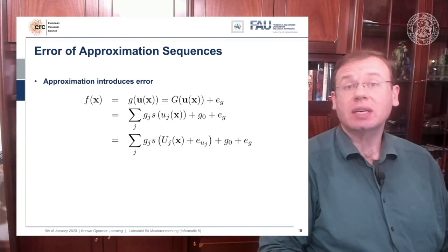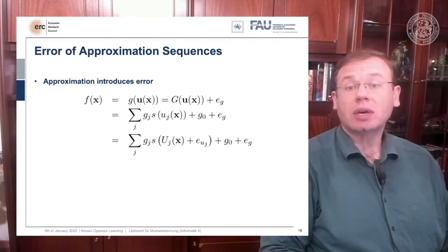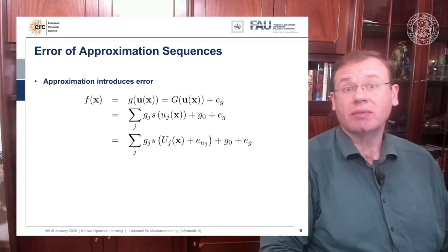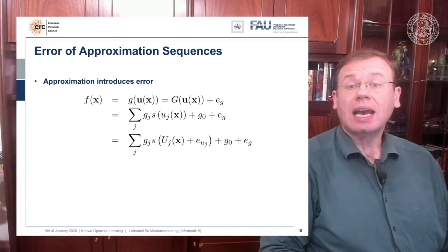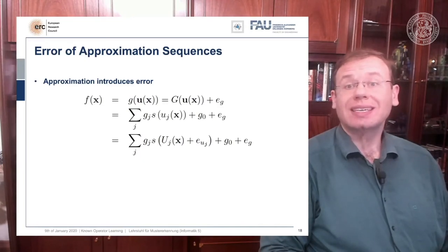In the next line we can see we can also use the definition of capital G. That is a linear combination of sigmoid functions, and here we then use component wise the original function U J, because it is a vectorial function. And of course we have the different weights G J, the bias G zero, and the error that we introduced by computing EG.